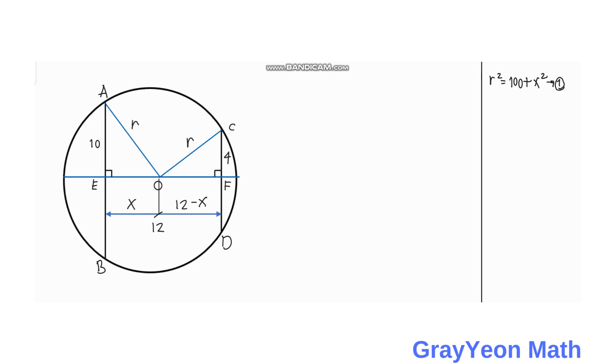Next thing that we have to do is we focus on triangle CFO. In triangle CFO, the equation we have will be R squared is equal to 4 squared plus 12 minus X squared. So simplifying that we have R squared is equal to 16 plus 12 squared is equal to 144 minus 2 times 12 is 24X.